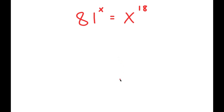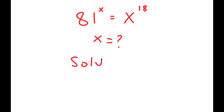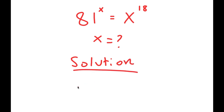In this problem, I have 81 to the power of x is equal to x to the power of 18, and I want to find the value of x. For my solution, I'm going to rewrite this equation.